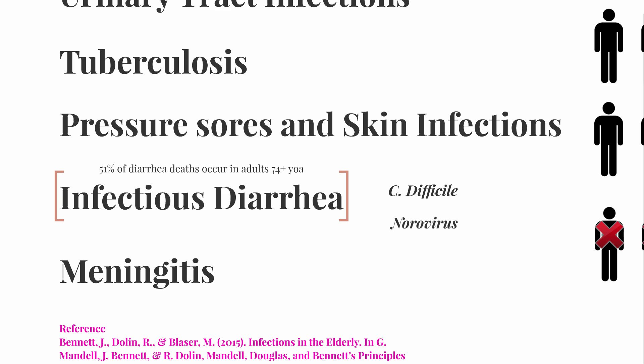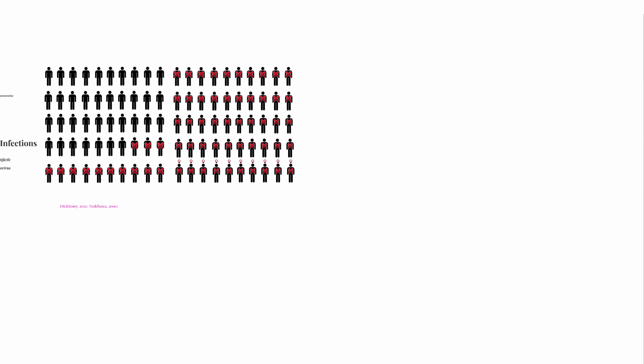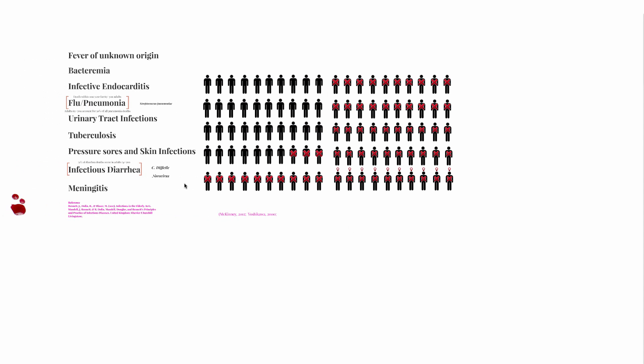For example, in a recent outbreak case of C. difficile in a residential care home in the UK, five of six infected patients died within one month of the infection. An investigation revealed problems with hand hygiene and environmental cleaning. All of these causes are prevalent among older adults, but for now remember flu, pneumonia, and infectious diarrhea. If you'd only learn about two major infectious threats to the elderly, you'd be well served to learn about these two.